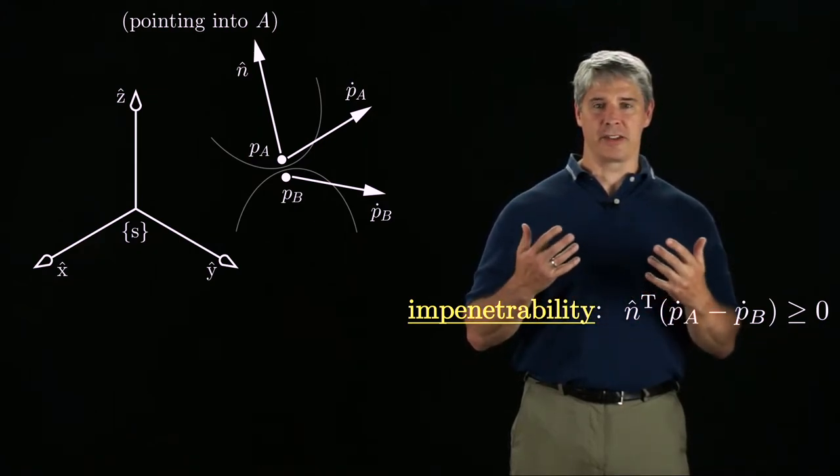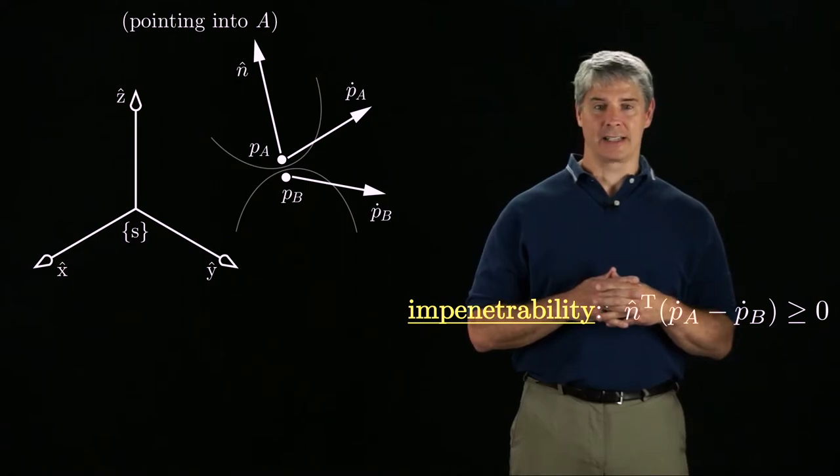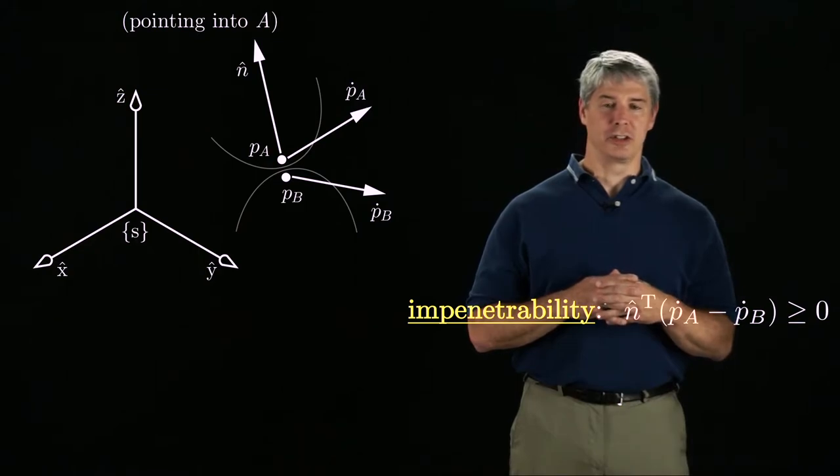If this quantity is greater than zero, the two bodies break contact. The impenetrability constraint is a single inequality constraint on the twists of the two bodies.